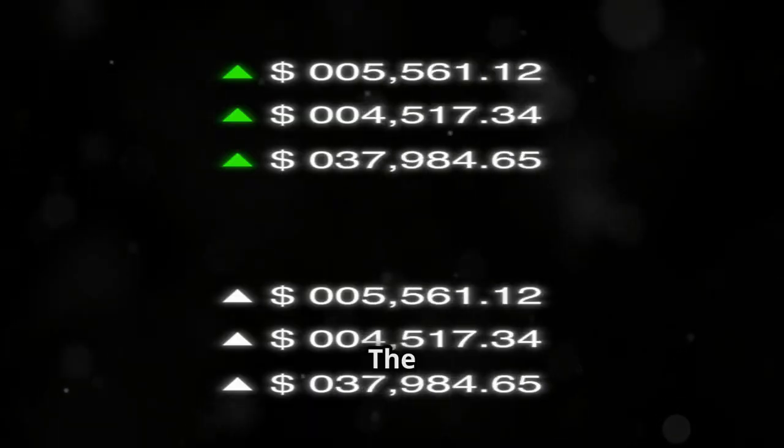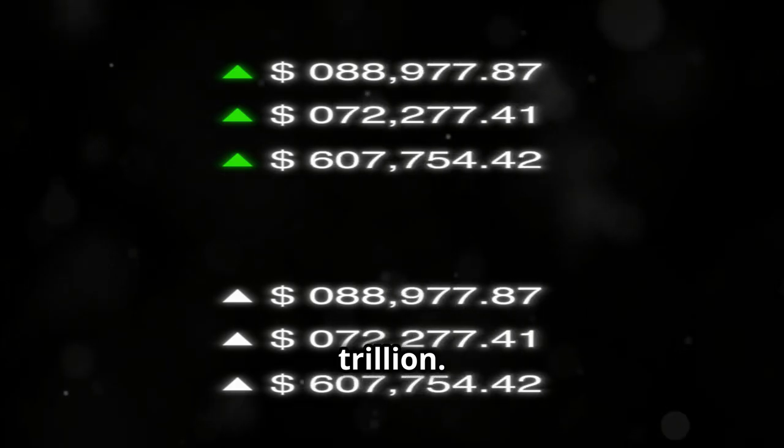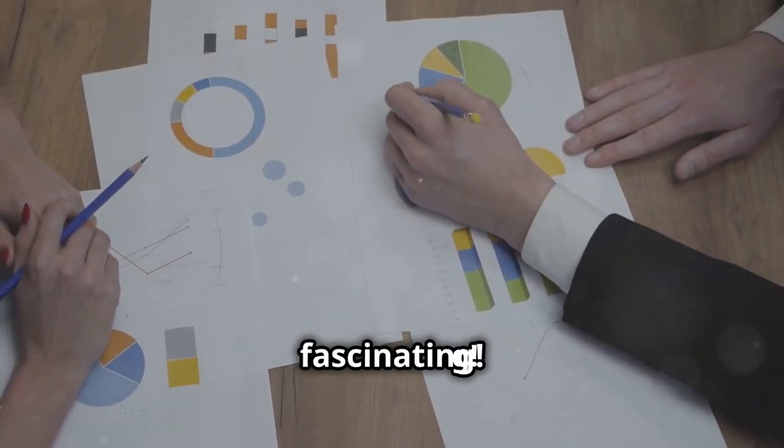So, there you have it. The collective wealth of U.S. millionaires is an astonishing $73.5 trillion. Wealth distribution in America is indeed fascinating.